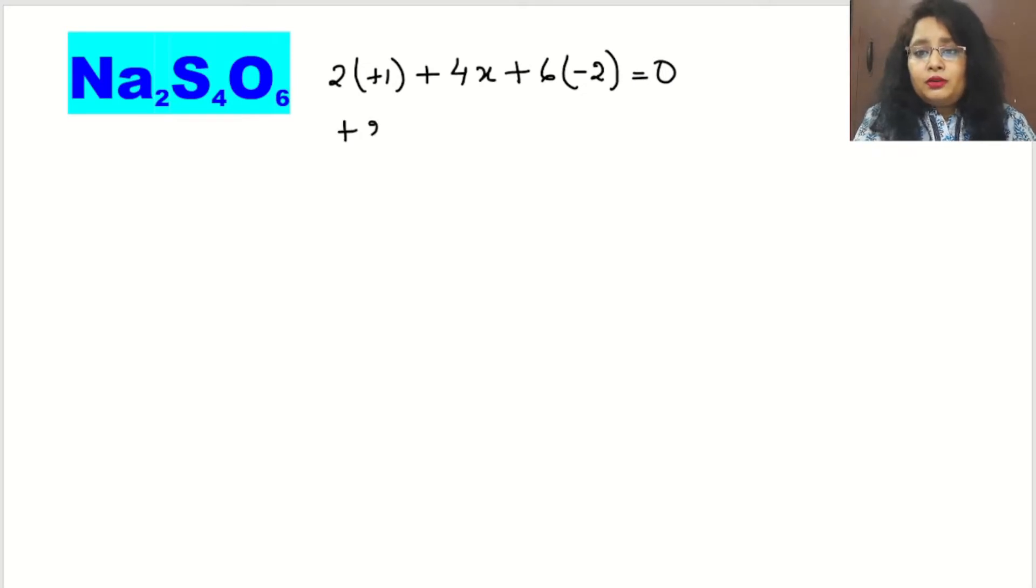Let's find. So this will be 2 + 4x - 12 = 0. So 4x is equal to 12 - 2, that will be 12 - 2 = 10, so x will be 10/4 or we can say 5/2.